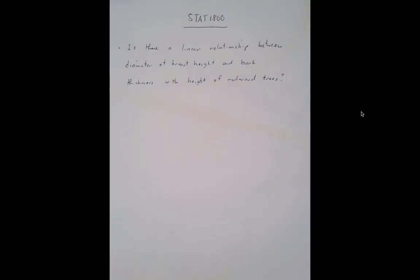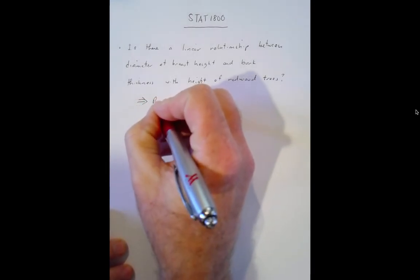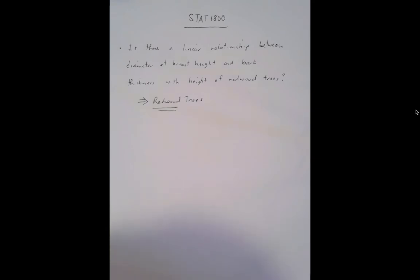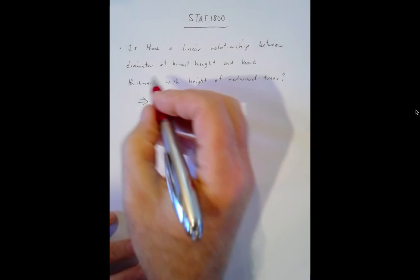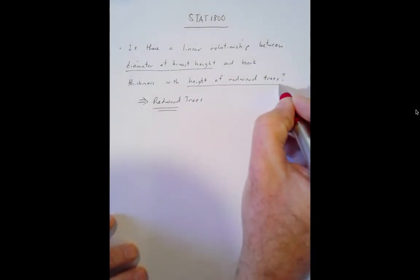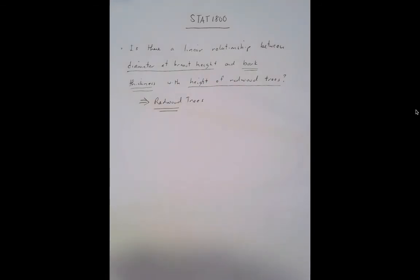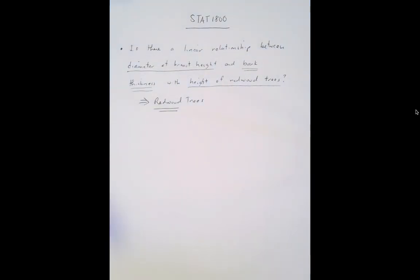All right gang, STAT 1800, more on multiple regression. Last video I had to quit early because of a coughing attack, so hoping that doesn't happen. Let's focus on the data set — redwood trees, given just as 'redwood' in StatCrunch. What we've looked at before in simple linear regression is the relationship between diameter at breast height and the height of a redwood tree. Now I'm interested to see if there's additional information to be gained in predicting height by adding bark thickness.